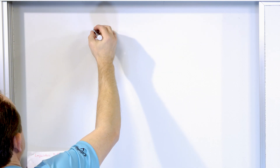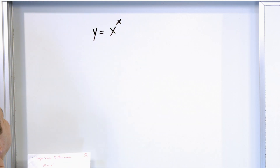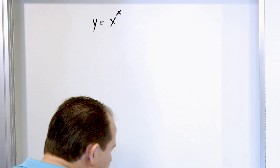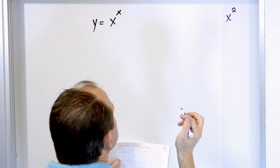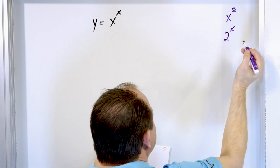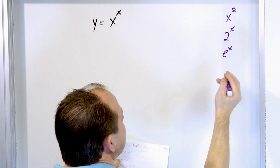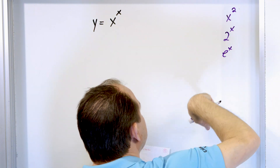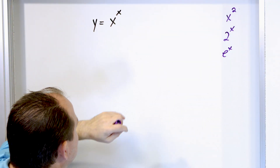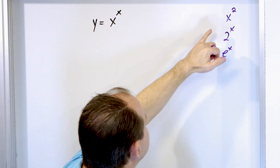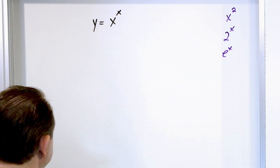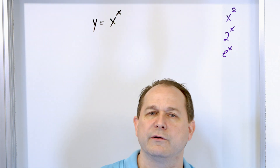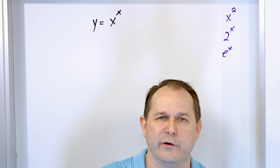This sounds a little complicated, but I promise it's going to be very simple. Consider the function y = x^x. If I ask you to find the derivative, you don't know how to do it. You know how to take the derivative of x² with the power rule, and you know how to take the derivative of 2^x or e^x, since those are a number to a variable. But x^x is a variable to a variable — it doesn't fit any of those categories. This is called logarithmic differentiation.